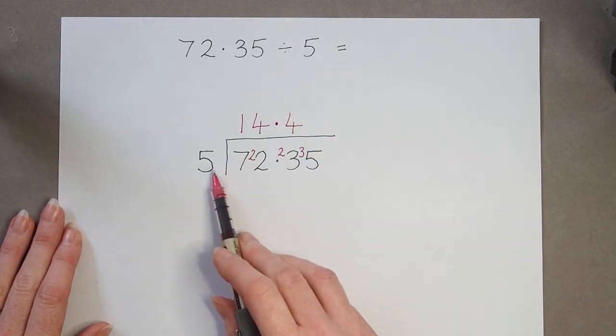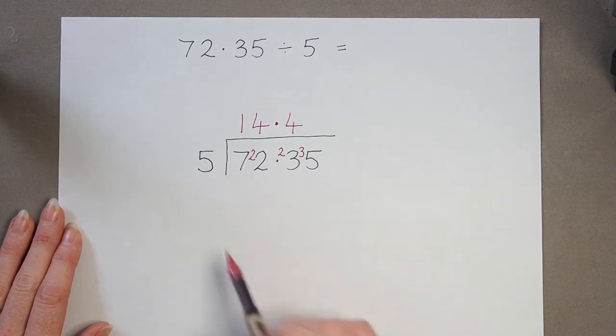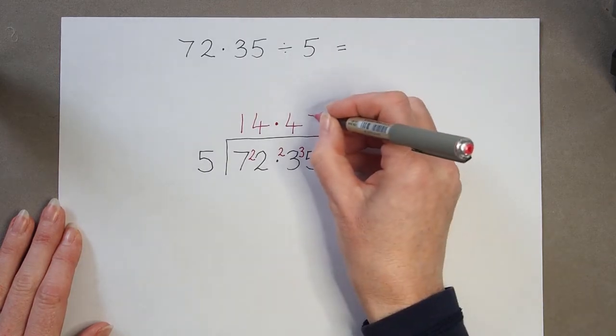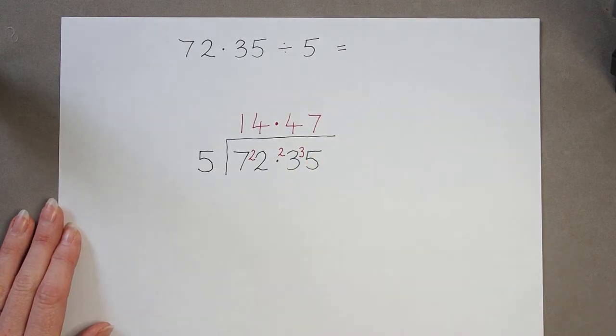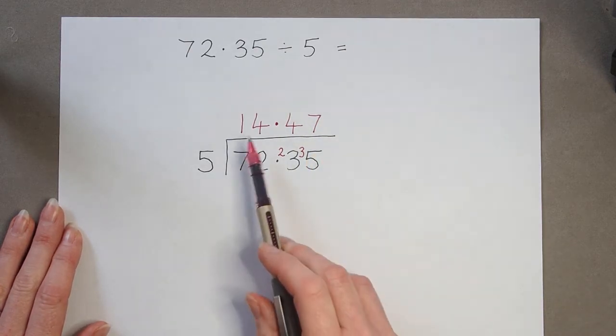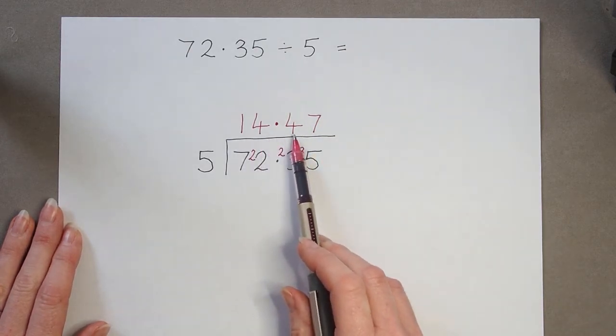And now, thirty-five divided by five is seven. So my answer is fourteen point four seven.